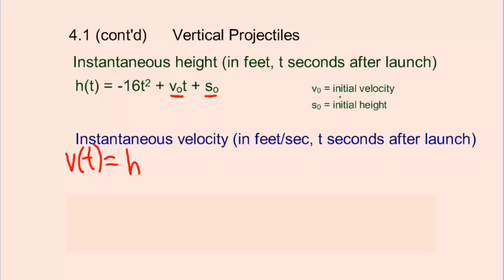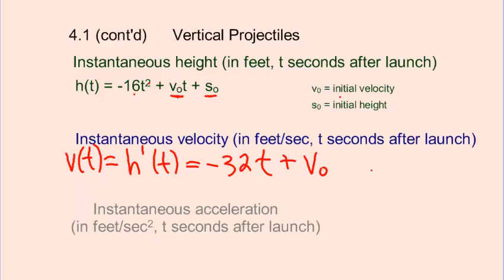So, v is going to be the same as h prime t. If you differentiate this, you can bring the two down, you get a negative 32. t is now going to the first power instead of the second. Plus, differentiating constant t in the middle term will just give you the constant. So, that's v naught.